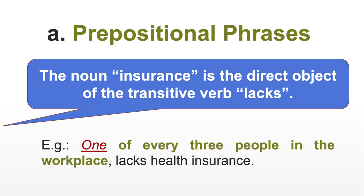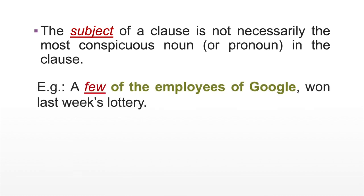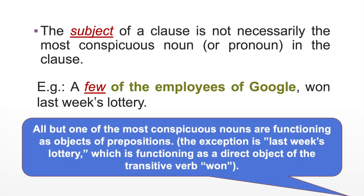The noun insurance is the direct object of the transitive verb lacks. Now, do not worry about the direct objects yet. We will discuss them later in the lesson. The subject of a clause is not necessarily the most conspicuous noun or pronoun in the clause, such as in this example. A few of the employees of Google won last week's lottery. All but one of the most conspicuous nouns are functioning as objects of prepositions. The exception is last week's lottery, which is functioning as a direct object of the transitive verb won.